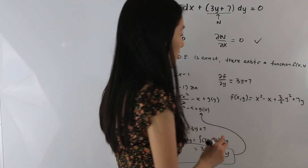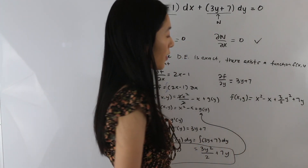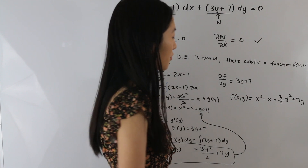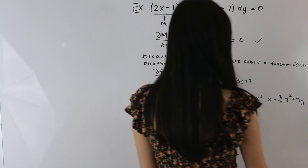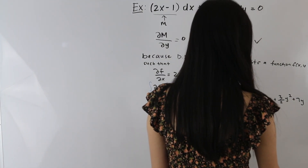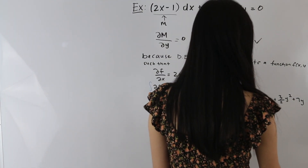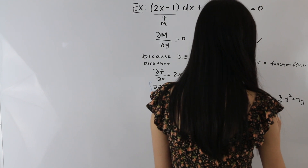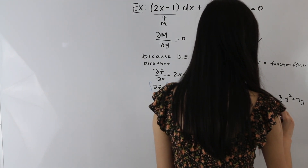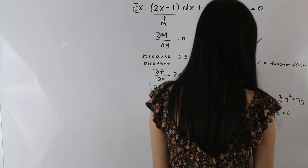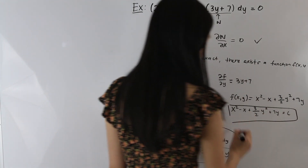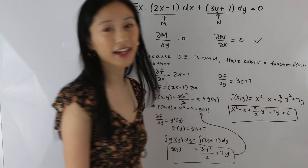That is our solution. If we want to write it in implicit form, we can write this as x² − x + (3/2)y² + 7y = c, where c is a constant. And so that is our answer.